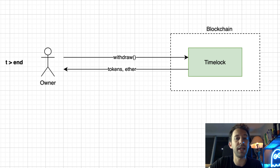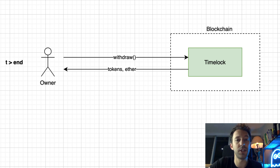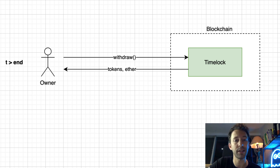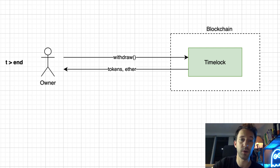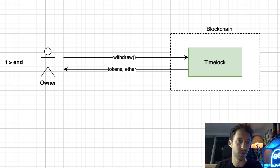After the deployment, you will deposit your assets in the timelock contract. It can receive both ether and ERC20 tokens. Then after the expiration of the timelock, you will be able to withdraw your crypto from the timelock contract. At any time, if you try to withdraw your crypto before the end of the timelock, it's not going to work.